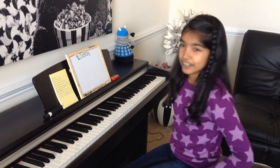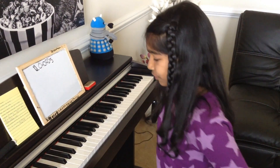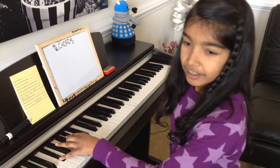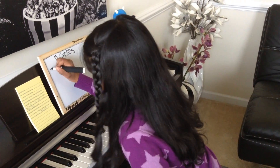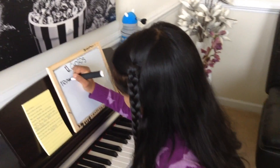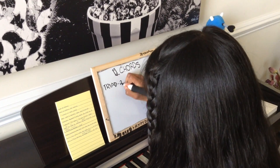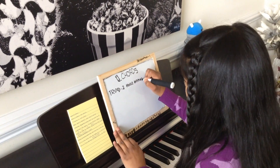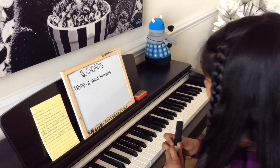Hi, today I'd like to talk to you about chords. Chords are the basic harmony of a song. An example of a chord is this. A three-note chord is also called a triad. A triad consists of two third intervals. Here's an example of a triad.